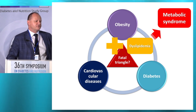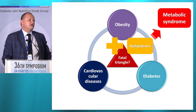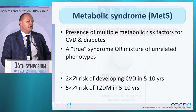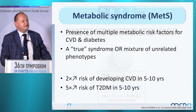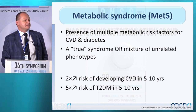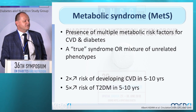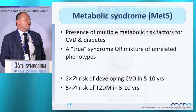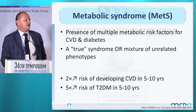If we add dyslipidemia to this fatal triangle, we can talk about metabolic syndrome — the presence of multiple metabolic risk factors for cardiovascular diseases and diabetes. People with metabolic syndrome have a higher risk of developing cardiovascular diseases within the next five to ten years, and also five times higher risk of developing type 2 diabetes within five to ten years. The pathogenic denominators are atherogenic dyslipidemia, arterial hypertension, and hyperglycemia.